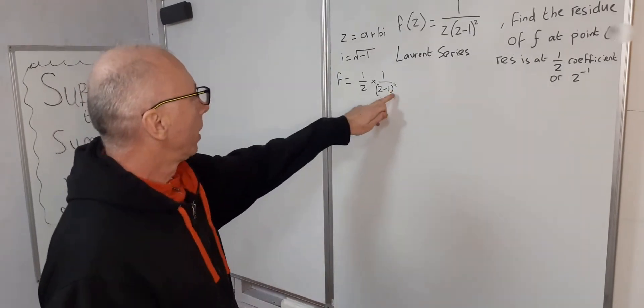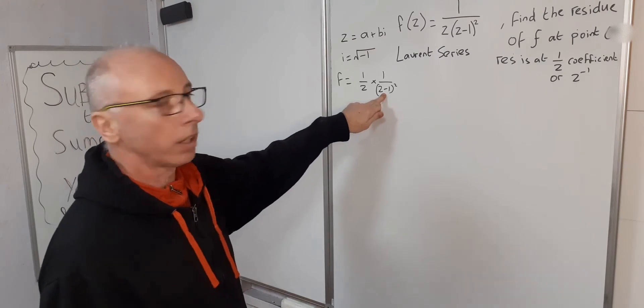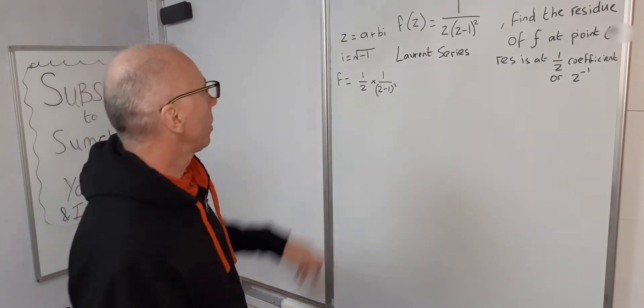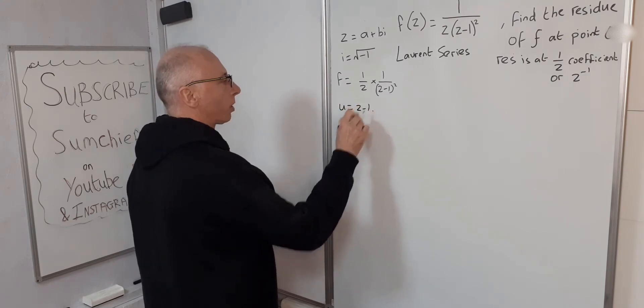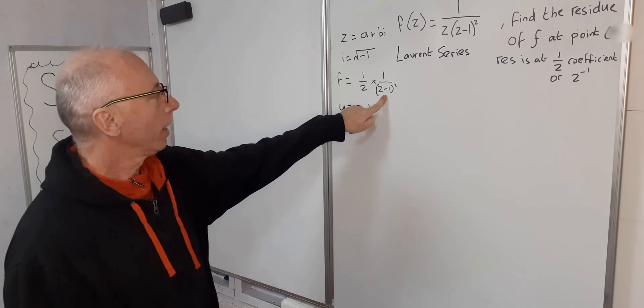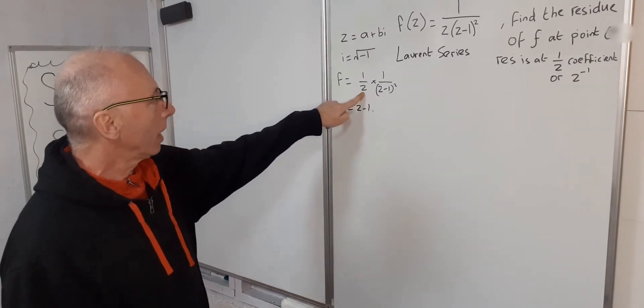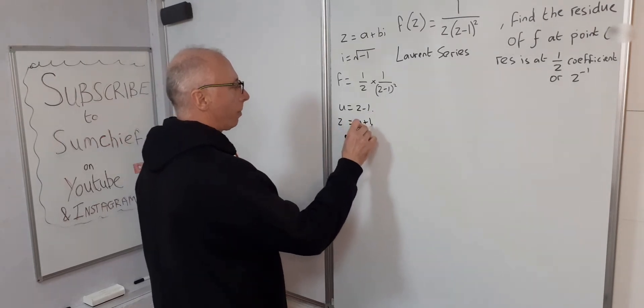So how are we going to do that? Well if we let this just be a single letter, doing a substitution, so let's do a u sub: u equals z minus 1. That will then give us a 1 over u squared, that'll be good, but then we need to get back to this one, so therefore z would equal u plus 1.